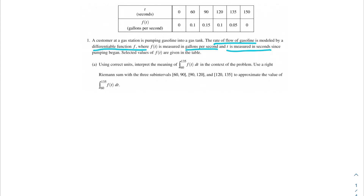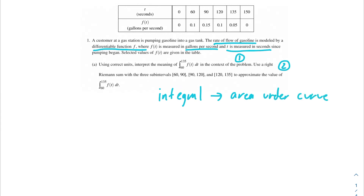Our first problem asks us to use the correct units, interpret the meaning of the integral from 60 to 135 of f of t dt in the context of the problem, and then use a right Riemann sum with the three subintervals listed to approximate the value of that integral. Let's break down this problem — it has two steps. The first step is to interpret the meaning, and then the second step is to actually approximate the value. So let's think about integrals: we want to think area under the curve.